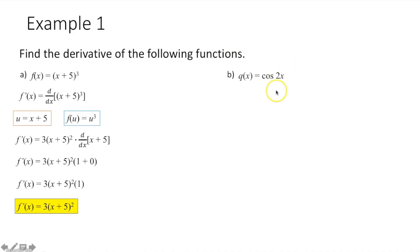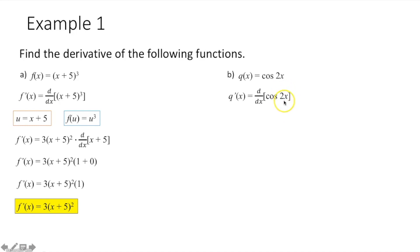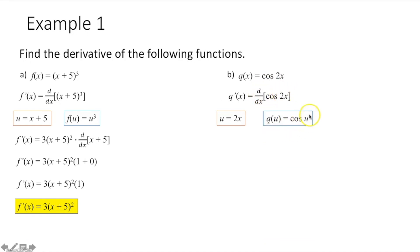Now we're going to do the derivative of a tougher one. We have q of x is equal to cosine of 2x. When we take the derivative here, this may not look like it, but it's actually a composite function — a function within another function. Our innermost function is what we need to find first. We're going to set u equal to our innermost function, which is 2x. The outer function then is going to be cosine of u.